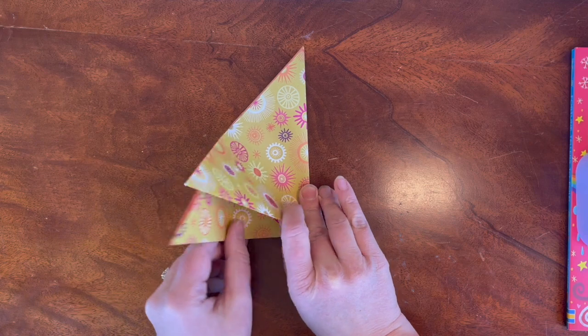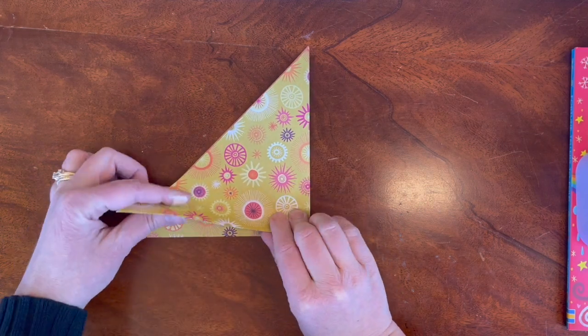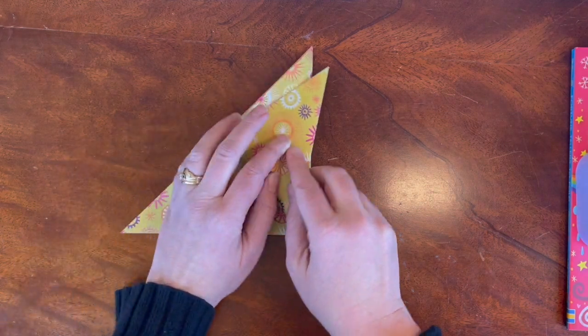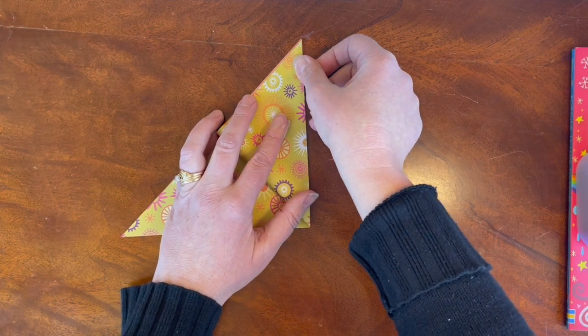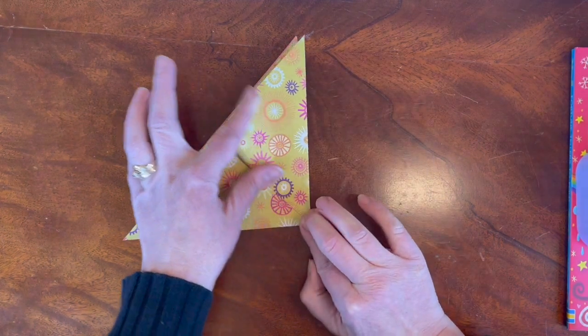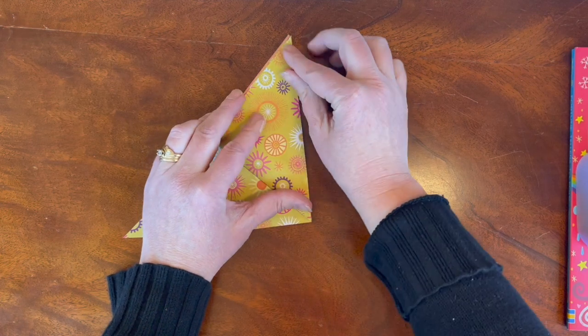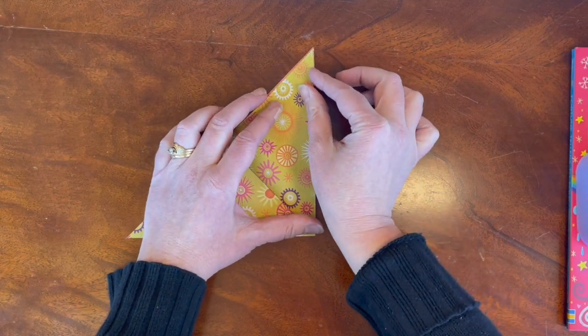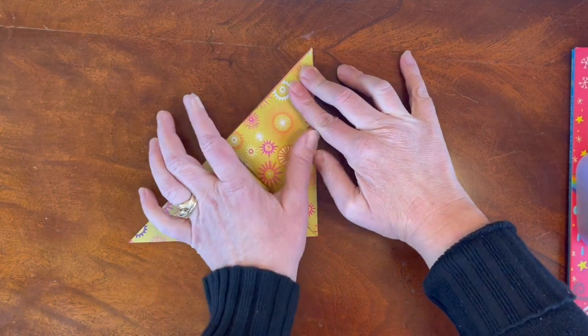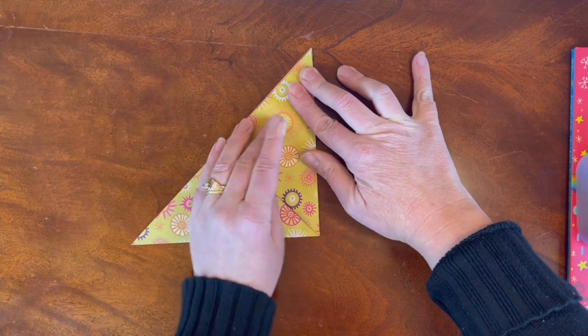Now you have two little points down here. Take the top one and fold it up to meet the top point, again lining up the edges and folding along the crease. If your folded edge goes astray, simply line it back up and re-crease the paper.